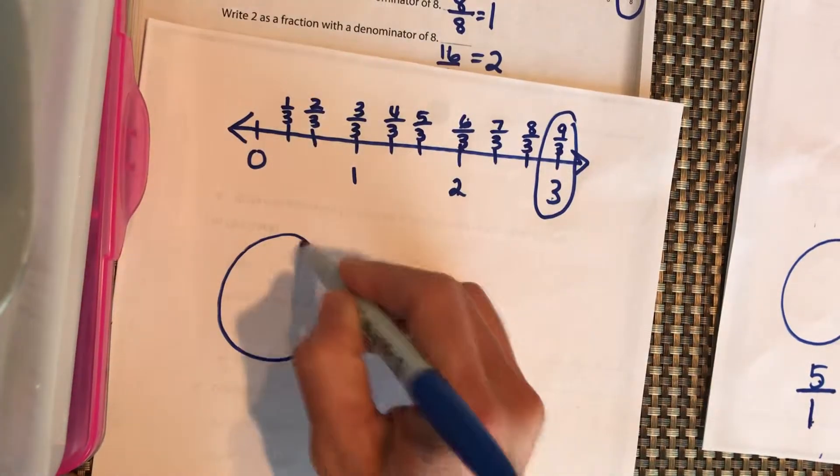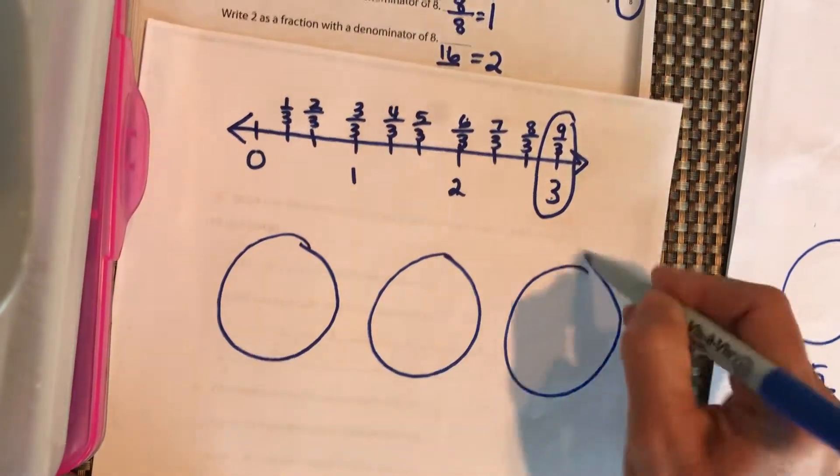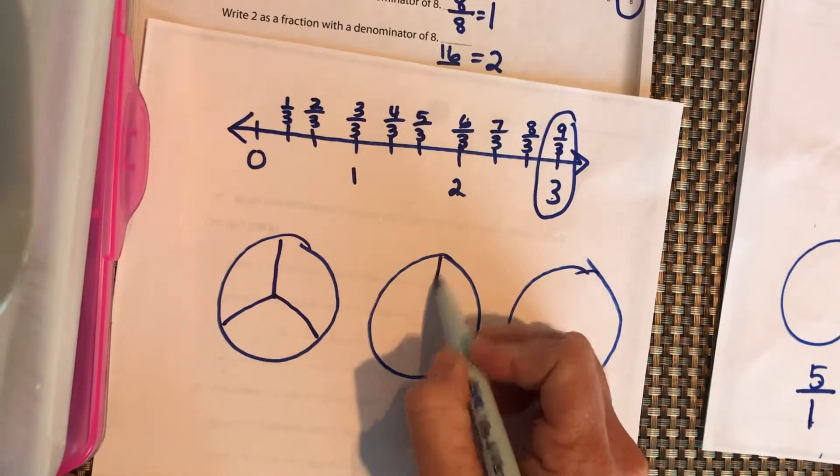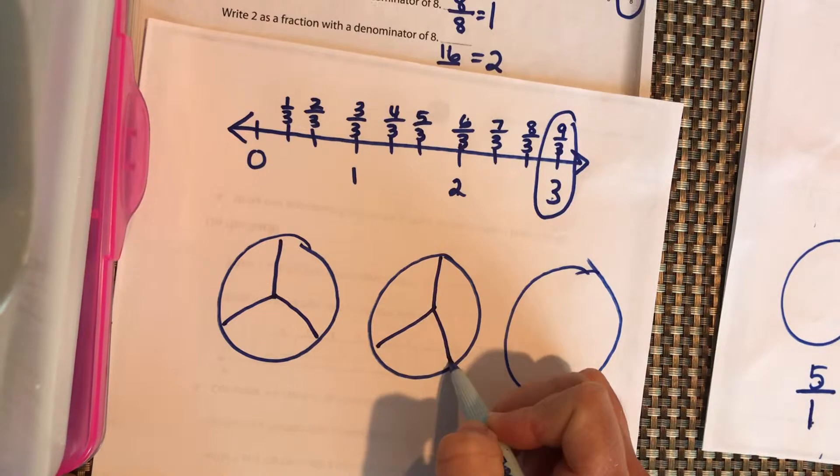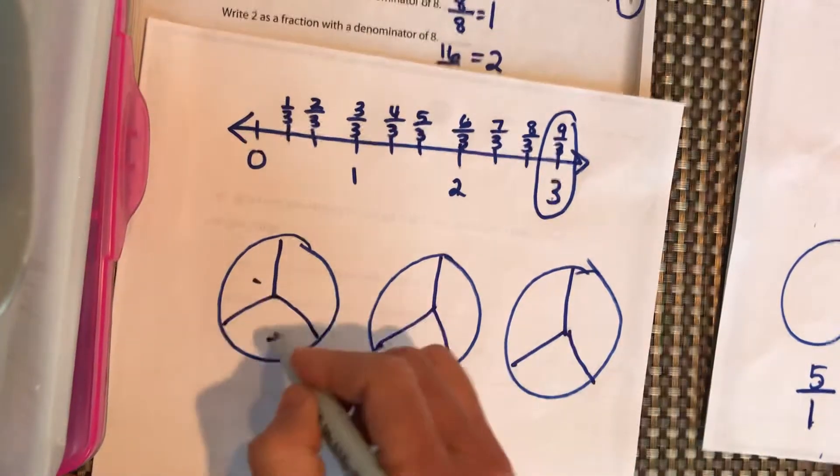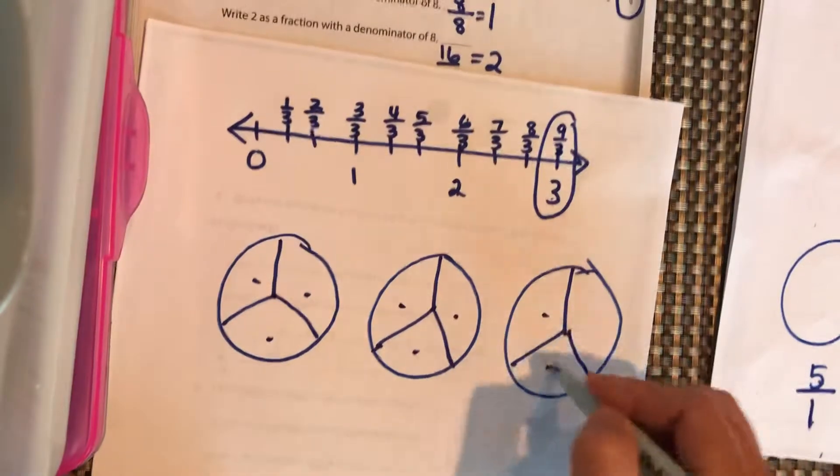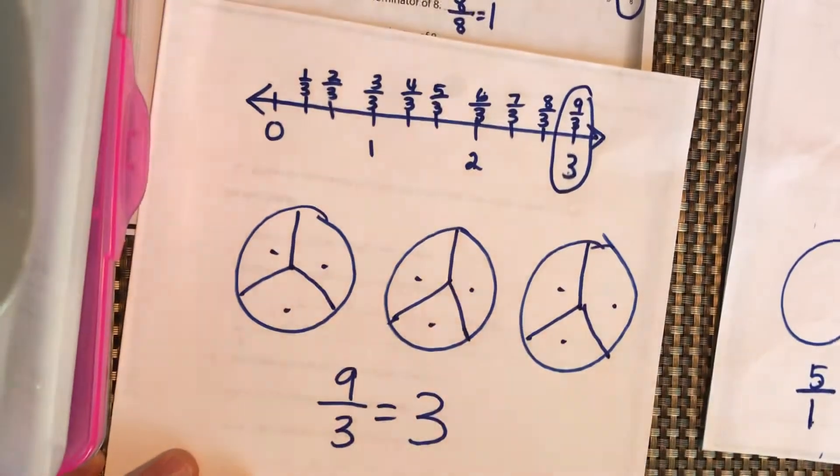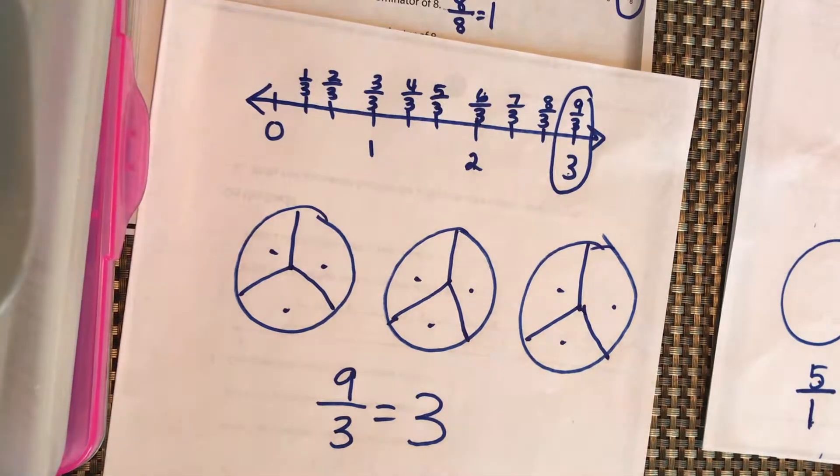And what we're saying here is we have 3 pizzas. We're going to divide each one of them into thirds. So I have 1, 2, 3, 4, 5, 6, 7, 8, 9. If I have 9 thirds, I have 3 whole pizzas.